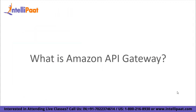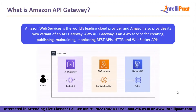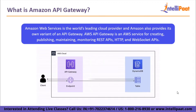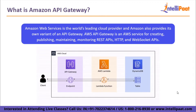Now that we have a rough understanding of what an API Gateway is, let us move on to what is Amazon API Gateway. Amazon Web Services is the world's leading cloud provider and Amazon also provides its own variant of an API Gateway. AWS API Gateway is an AWS service for creating, publishing, maintaining, and monitoring REST APIs. It also supports HTTP and WebSocket APIs as well.